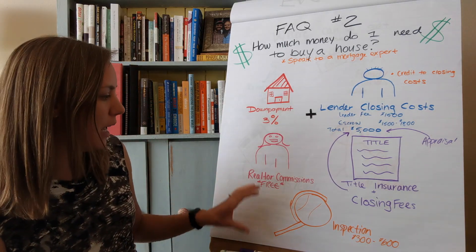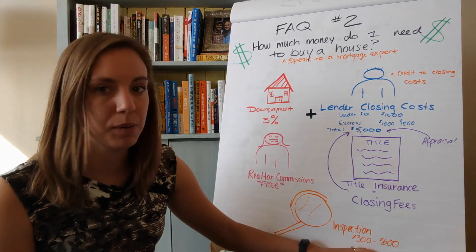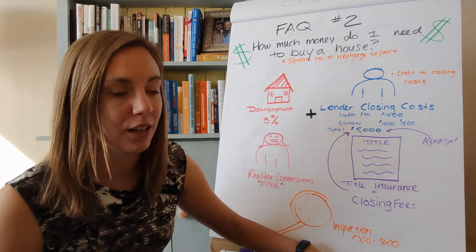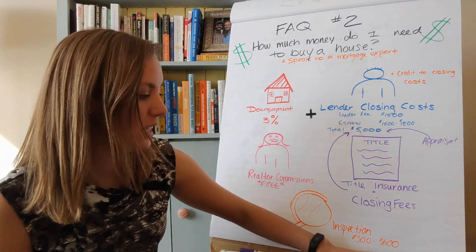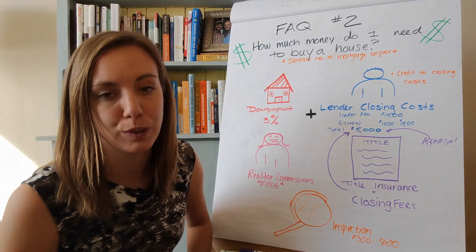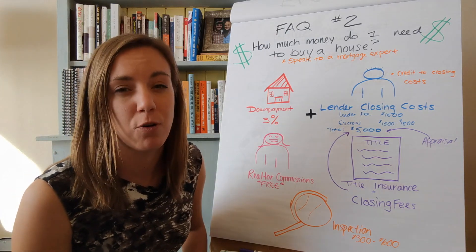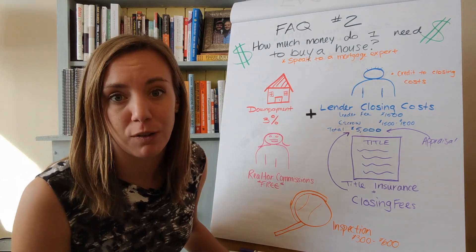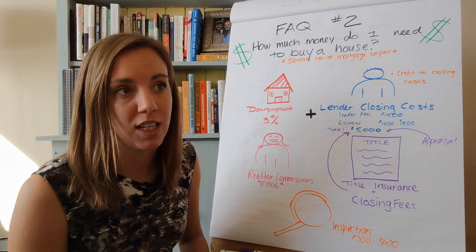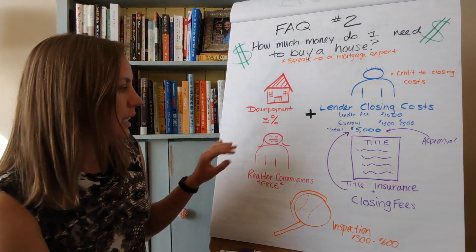On top of that, you have an inspection you're going to have to pay for. That'll usually be between $300 and $600, depending on which inspection package you select and the square footage of the home. As an example, a condo with one bed, one bath is going to be a lot more affordable to inspect than a 4,000 square foot mansion on an acre of land.